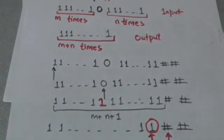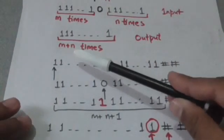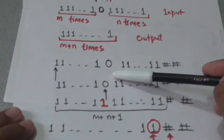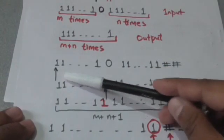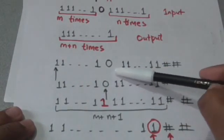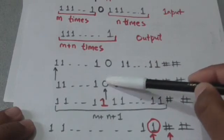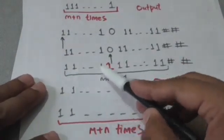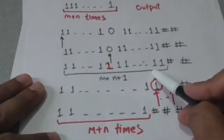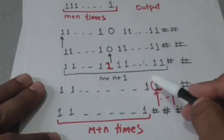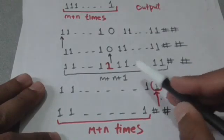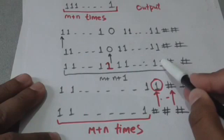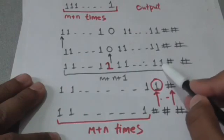Now see how the Turing machine will perform addition. First, the Turing machine will find the first zero to the right of the current head position. When it finds the zero, it will replace it by one. Now there will be m plus n plus one ones on the tape.